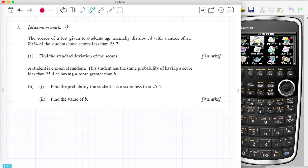The scores of a test given to students are normally distributed with a mean of 21. Straight away, there's no standard deviation given here. So I'm just going to write some notes down. The mean is 21, but I don't know the standard deviation, which is sigma squared.